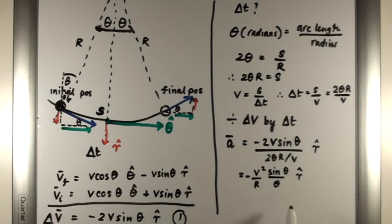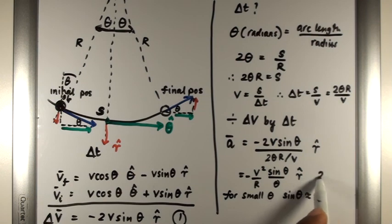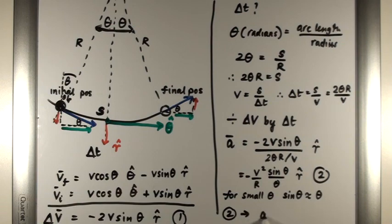Now, if theta is small, we can use the small angle approximation to simplify this equation. So for small values of theta, sine theta approximately equals theta. So this equation here goes to A is equal to minus V squared over R in the radial direction.